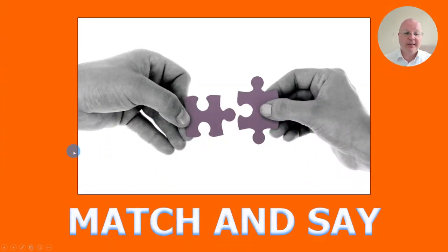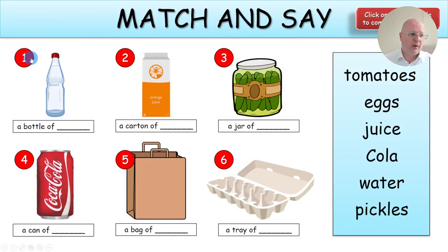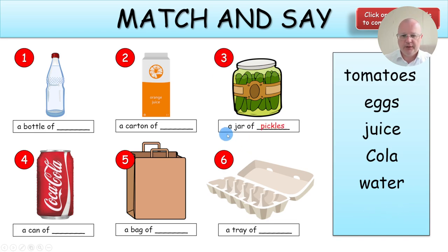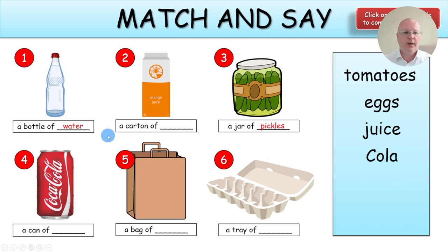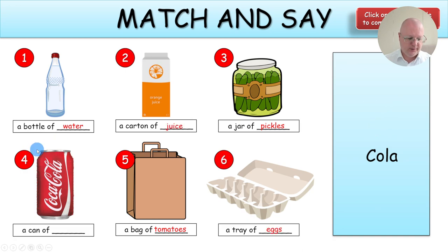Task 2 is Match and Say. You may want to go from one to six, or choose different numbers. It says here: click on the red circle to complete the phrase. So if you click on a circle, it will complete the phrase — for example, a jar of pickles. I suggest you invite a pair of students, one from each team, to stand up. You say a number — for example, one — and they need to complete the phrase. Whoever says it first gets a point. So you say one, and the student should say a bottle of water. Then you click and they can see the answer.